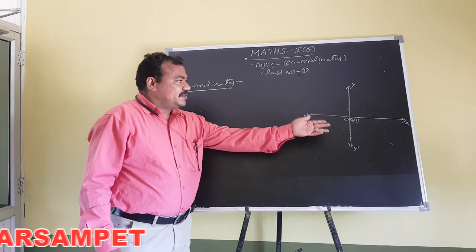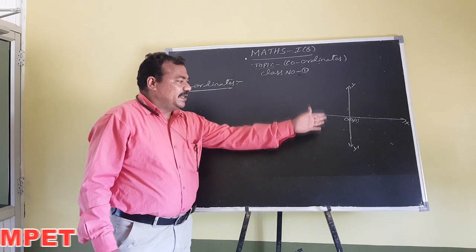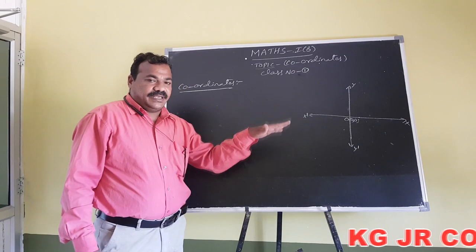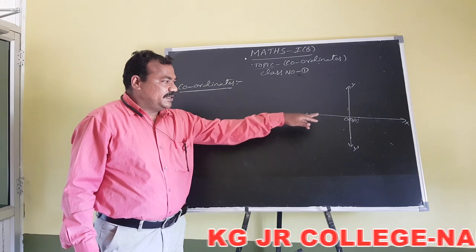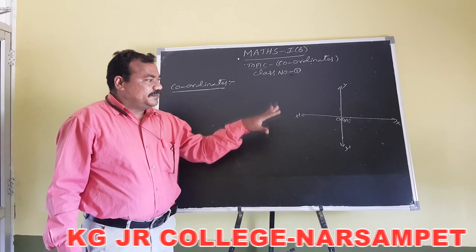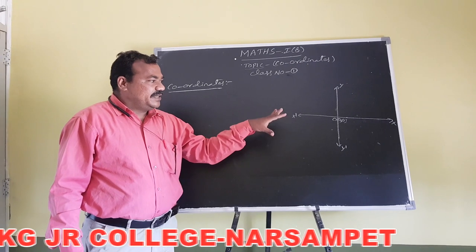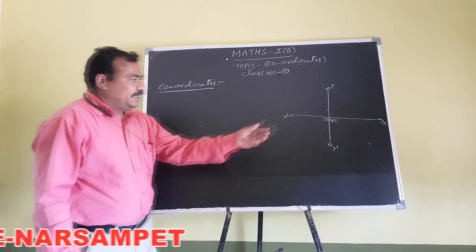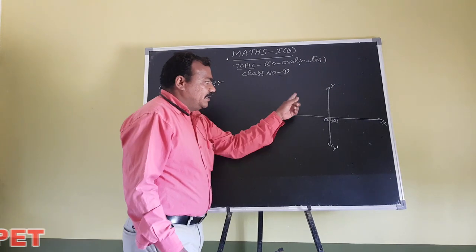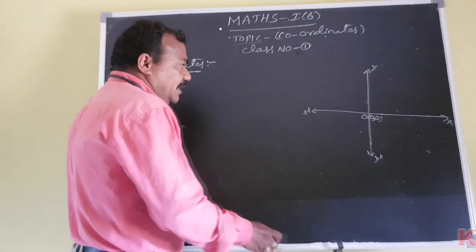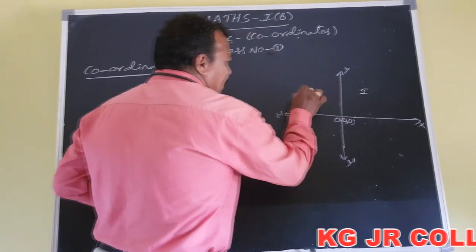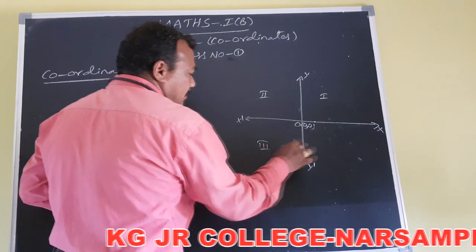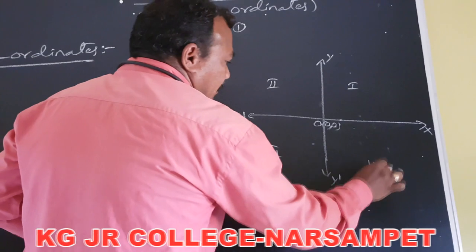In two-dimensional geometry, we have the x-axis and the y-axis. The point of intersection of the x-axis and the y-axis is the origin. These coordinates divide the plane into four parts: the first, second, third, and fourth coordinates.